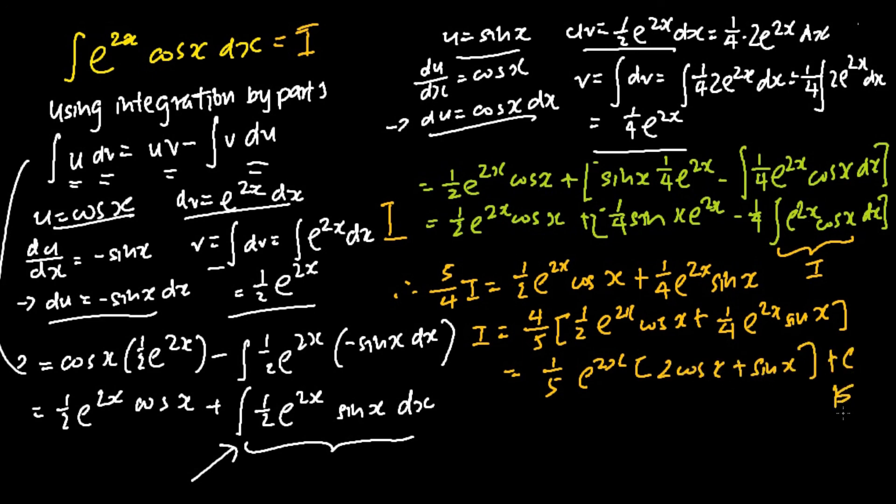And this is the final answer to the integration of e to the power of 2x cosine x dx. If you guys like this solution, help me press the thumbs up icon and do consider to subscribe. My name is Bob. Thank you guys for watching. I will see you in the next video. Goodbye guys.